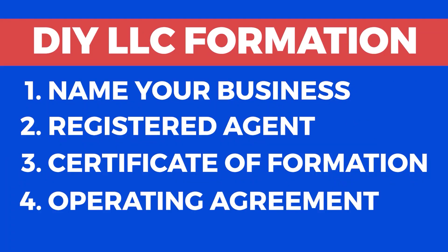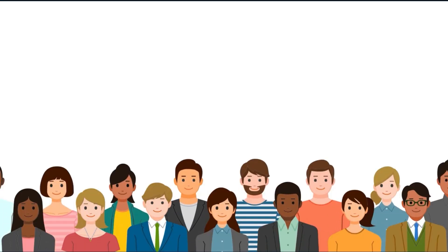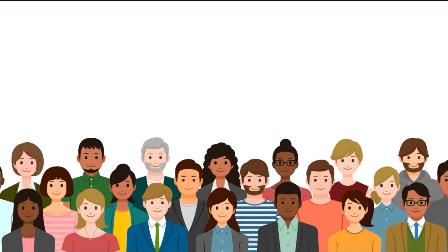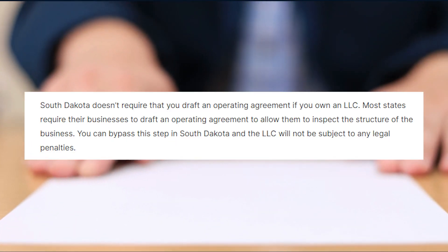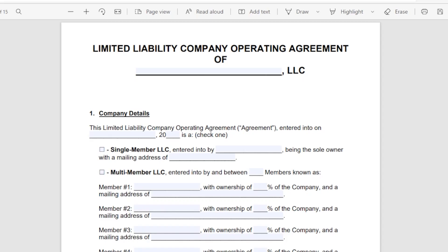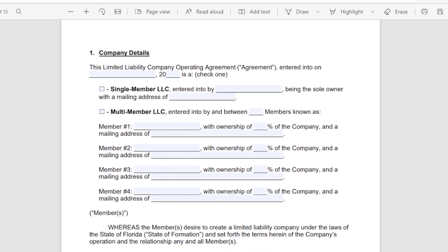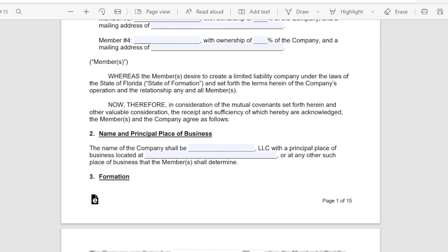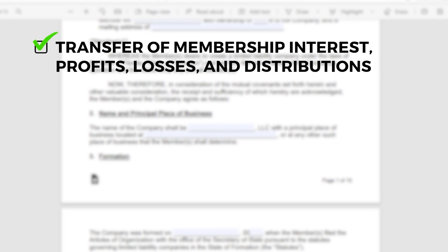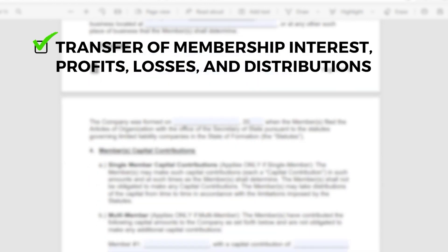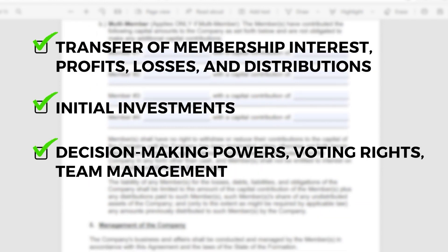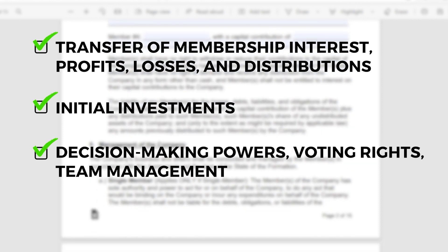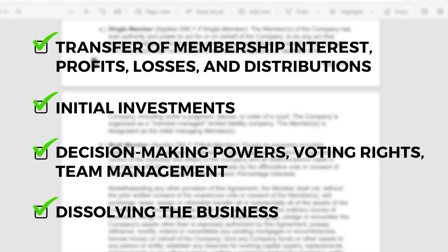Step 4: Preparing an Operating Agreement. An operating agreement is a good idea to have in place with the other members if your LLC has more than one member. Although a limited liability company operating agreement is not required for South Dakota, your operating agreement should clarify how your company or business will handle big picture issues. These include the transfer of membership interest, profits, losses, distributions, initial investments, decision-making powers, voting rights, team management, and lastly, dissolving the business.